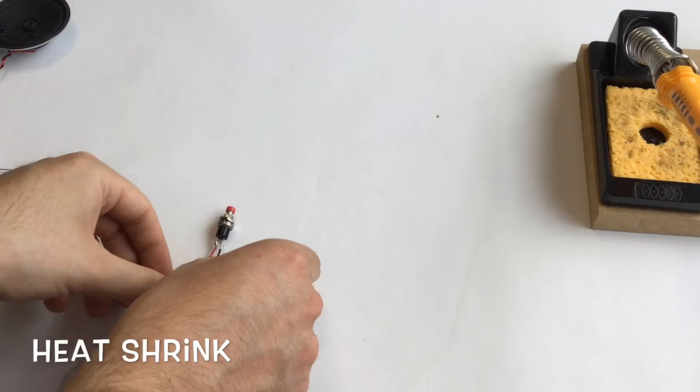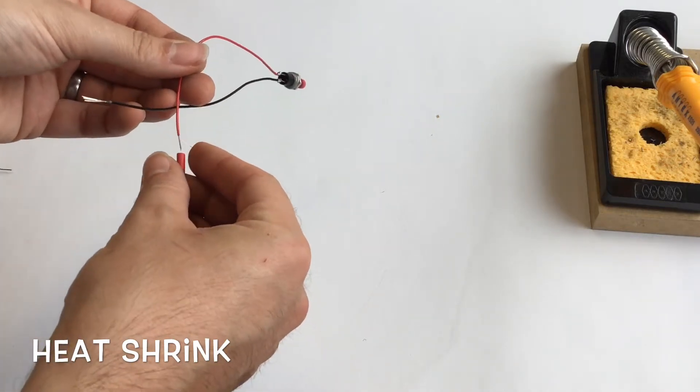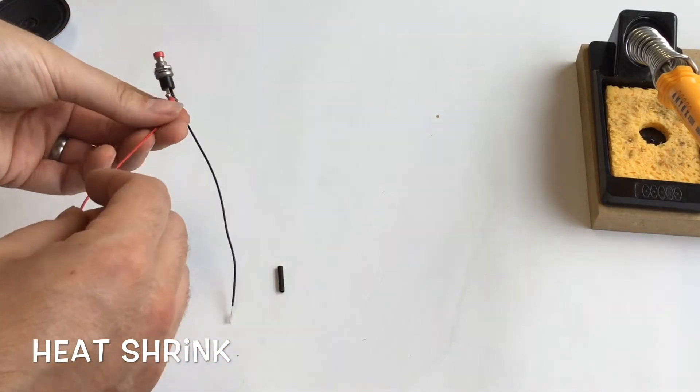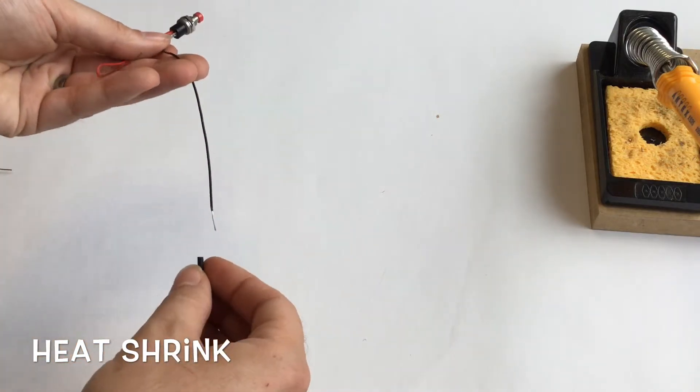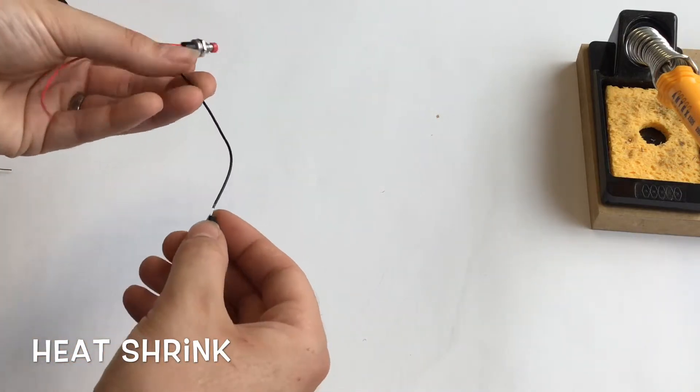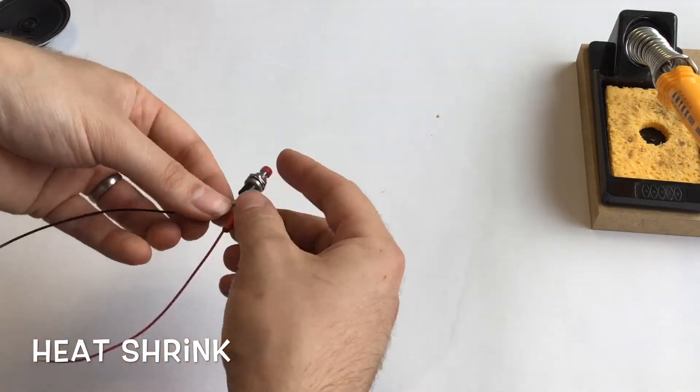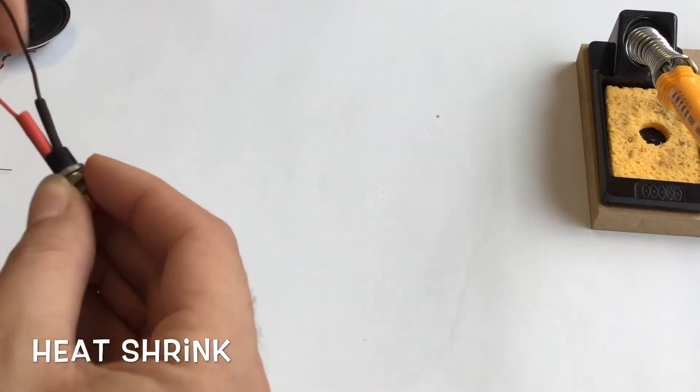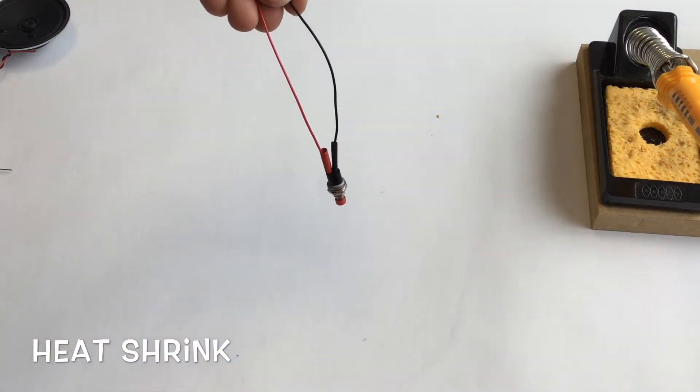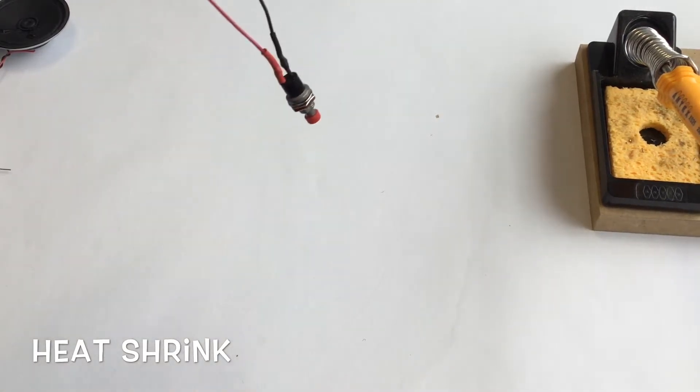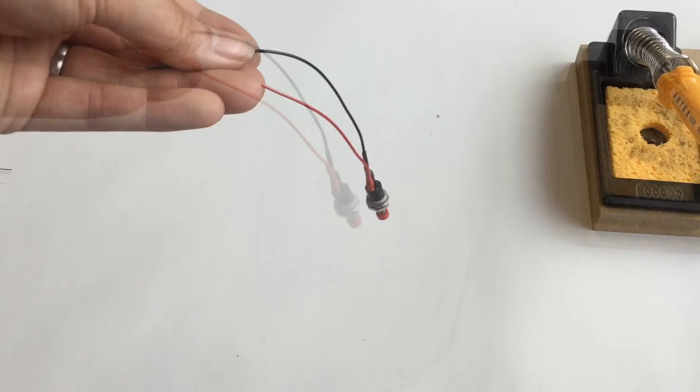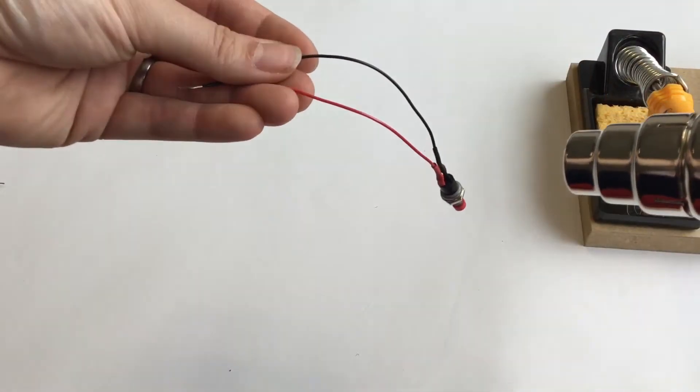Once soldered you'll need to put heat shrink over the terminals. This is exactly the same as the LEDs. Push the heat shrink into place and then we will use the heat gun to heat it up.